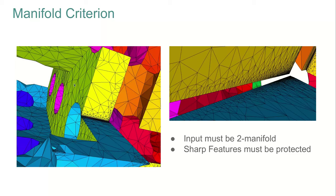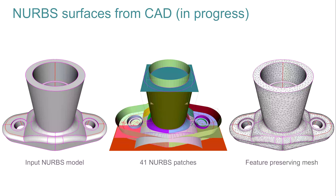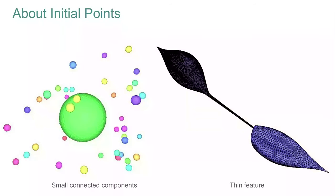Note that the input must be a two-manifold and sharp features must be protected for the meshing procedure to terminate and provide the expected result. There is also ongoing joint work with INRIA geometry factory to generate meshes from NURBS patches, where the difficult part is that patches are not conformal at their boundaries and either need to be trimmed or have gaps filled. Finally, a warning about initialization: if the input has many connected components, each must have at least four points so they are correctly meshed. Similarly, small features need enough points so they are not overlooked.